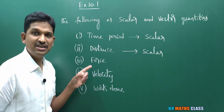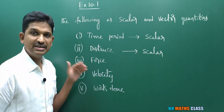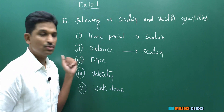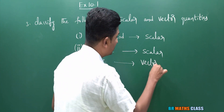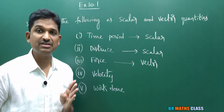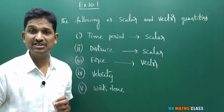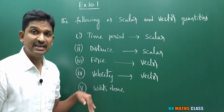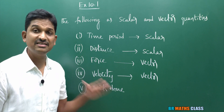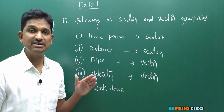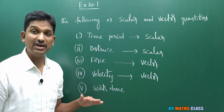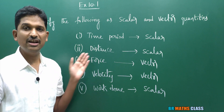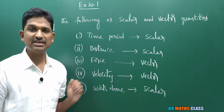Force is clearly a vector quantity — a physical quantity having both magnitude and direction, as explained in the first class. Velocity is a vector quantity. Acceleration is a vector quantity. Work done is a scalar — a physical quantity having only magnitude but no direction. Summary: Time — scalar. Distance — scalar. Force — vector. Velocity — vector. Work done — scalar.